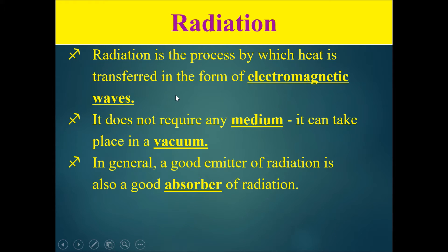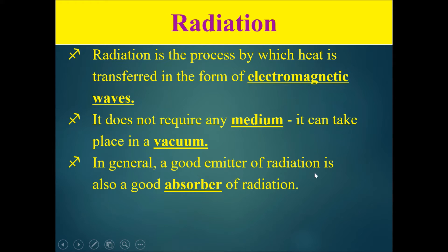This is the light from the sun hitting your skin and converting into heat energy. Because it is in the form of electromagnetic waves, it does not require any medium to transfer — it can take place in a vacuum. That's why the sun can pass heat through the vacuum of space all the way to the Earth.